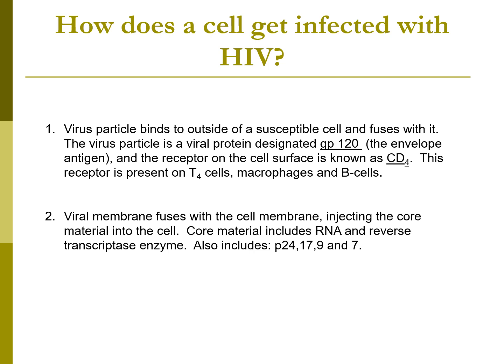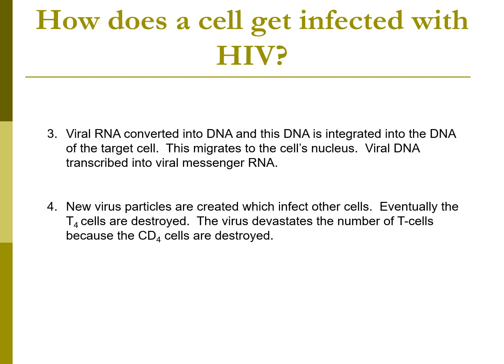The HIV virus particle binds to the outside of a susceptible cell and fuses to it. The viral protein is glycoprotein 120, an envelope antigen, and the receptor on the T-helper cell surface is the CD4 receptor — present on all T4 cells, macrophages, and B cells. The viral membrane fuses with the cell membrane, injecting core material including RNA, reverse transcriptase enzyme, P24, P17, P9, and P7. The viral RNA is converted into DNA and integrated into the target cell's DNA, migrating to the nucleus. Viral DNA transcribes into viral messenger RNA, new virus particles are created to infect other T-helper cells, and eventually the T4 cells are completely destroyed.